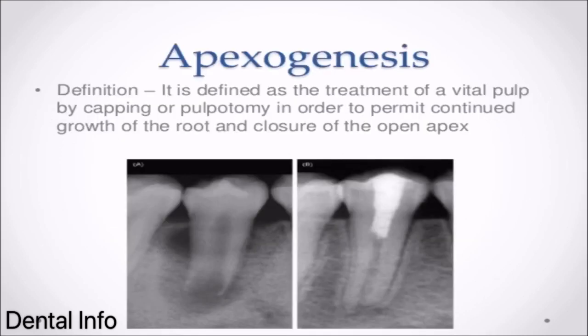Apexogenesis — Definition. It is defined as the treatment of a vital pulp by capping or pulpotomy in order to permit continued growth of the root and closure of the open apex.